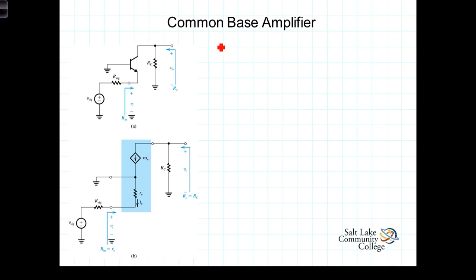We have then, just from observation, R-in is the resistance that we see looking into, in this case the emitter going to ground. R-in is just R-sub-E.